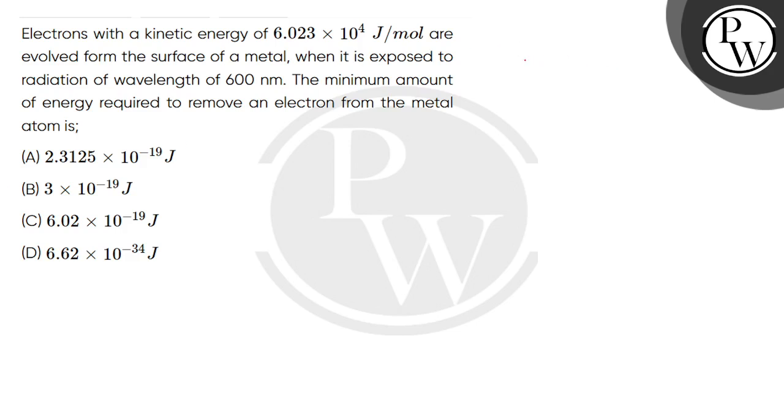This is very easy. This is your metal surface, and these are the radiations. Some portion of the energy is absorbed in this metal surface. The minimum energy required to remove the electron is the work function, and the other extra energy will go into the electron's movement, which we call kinetic energy.